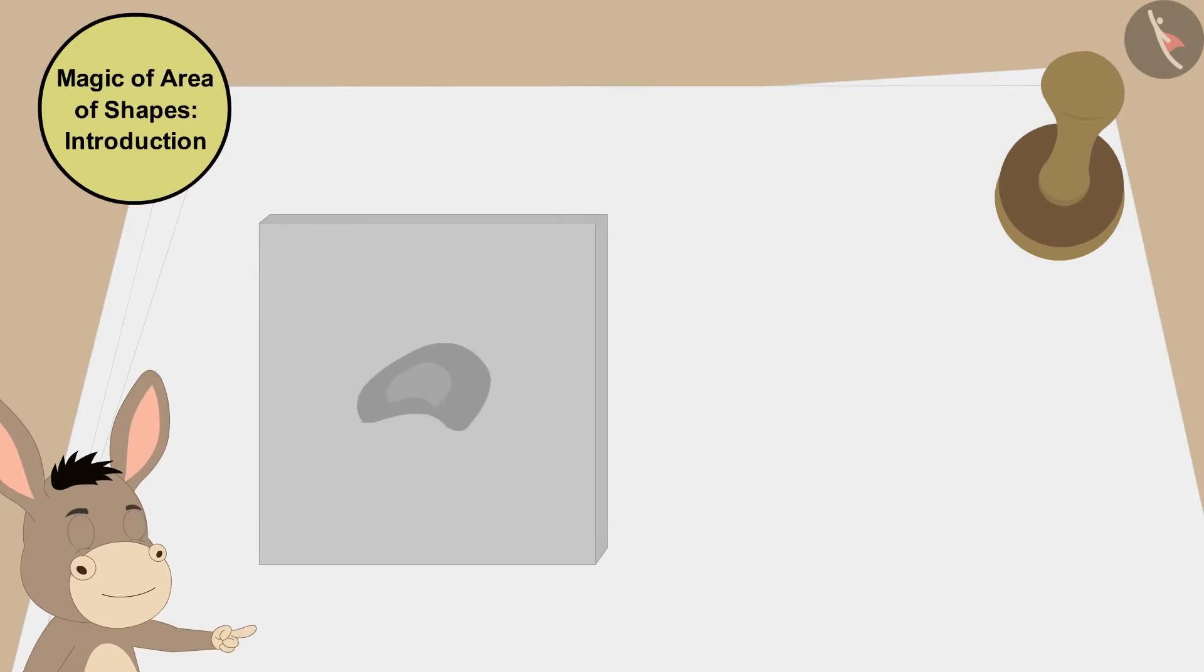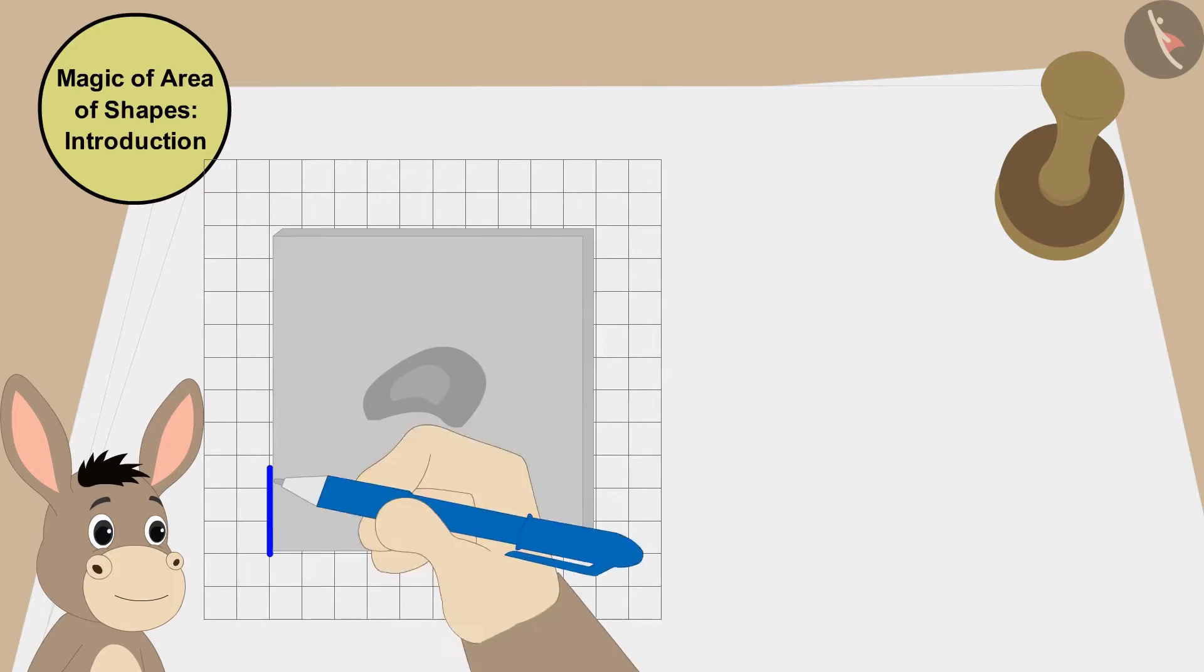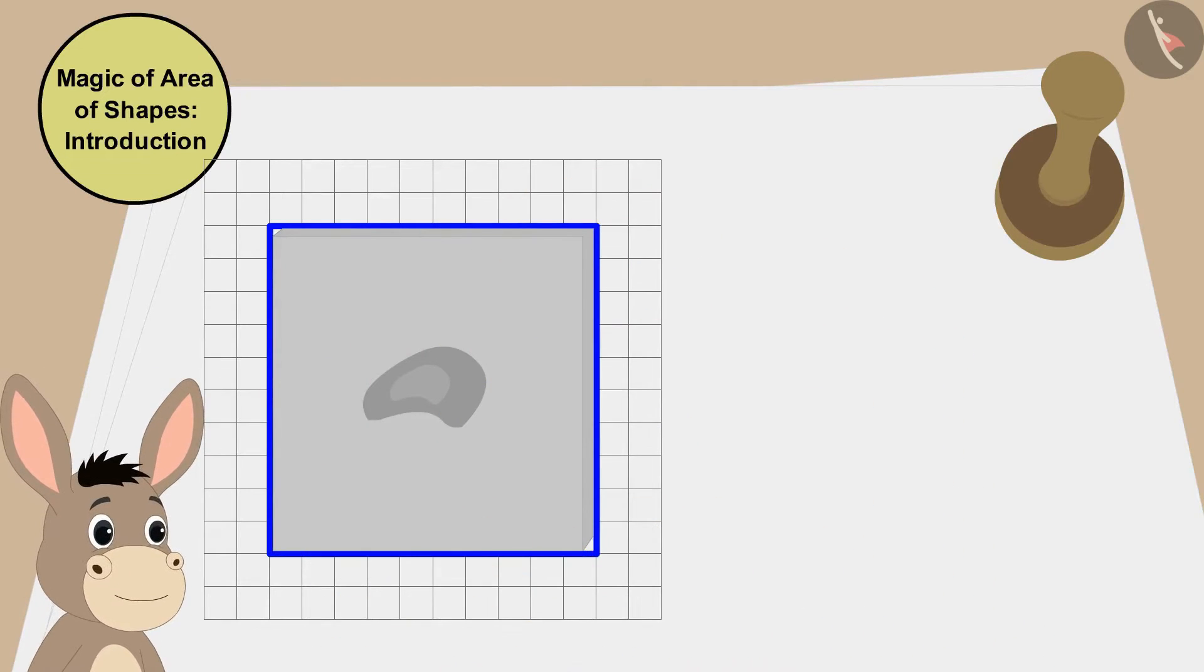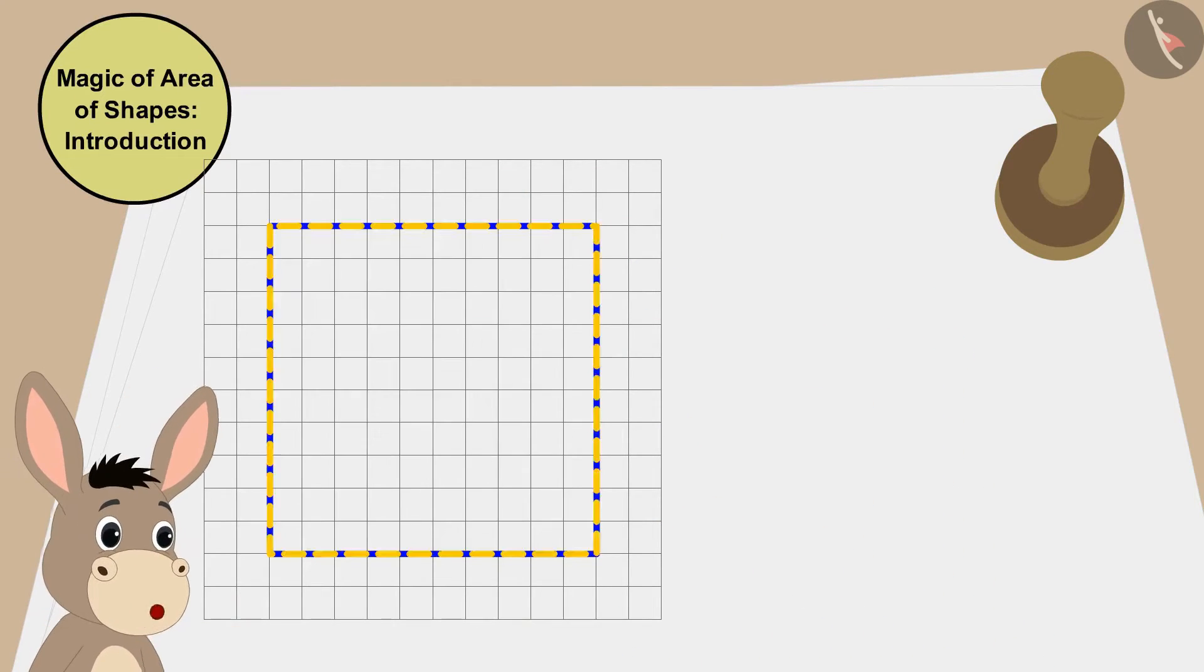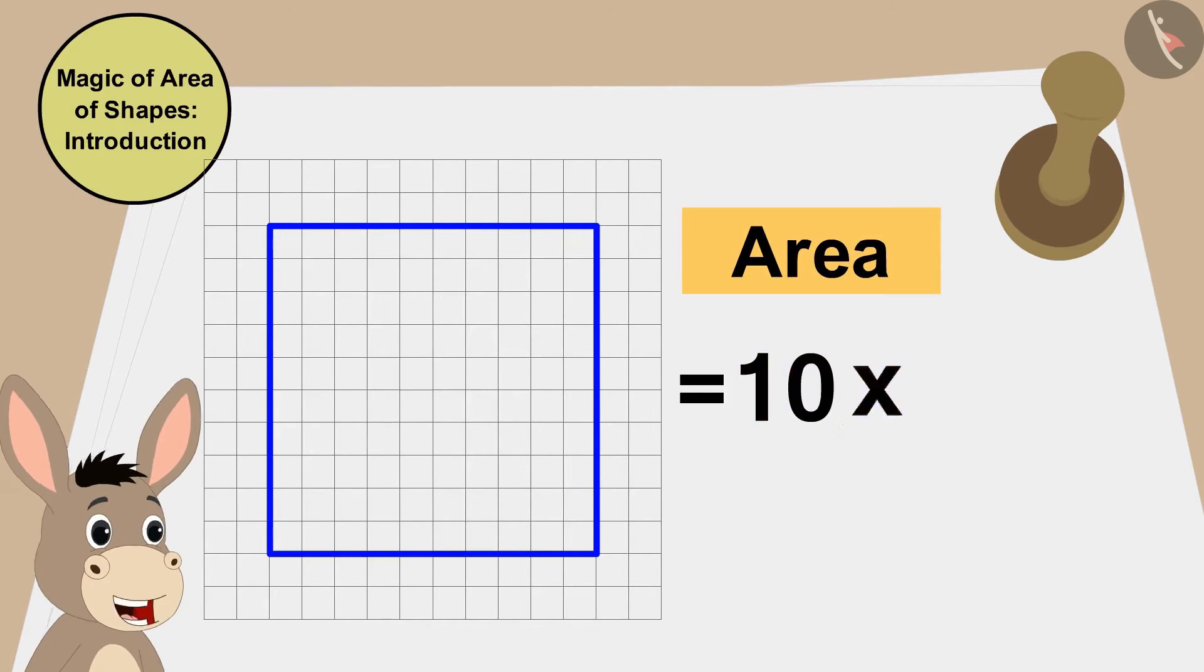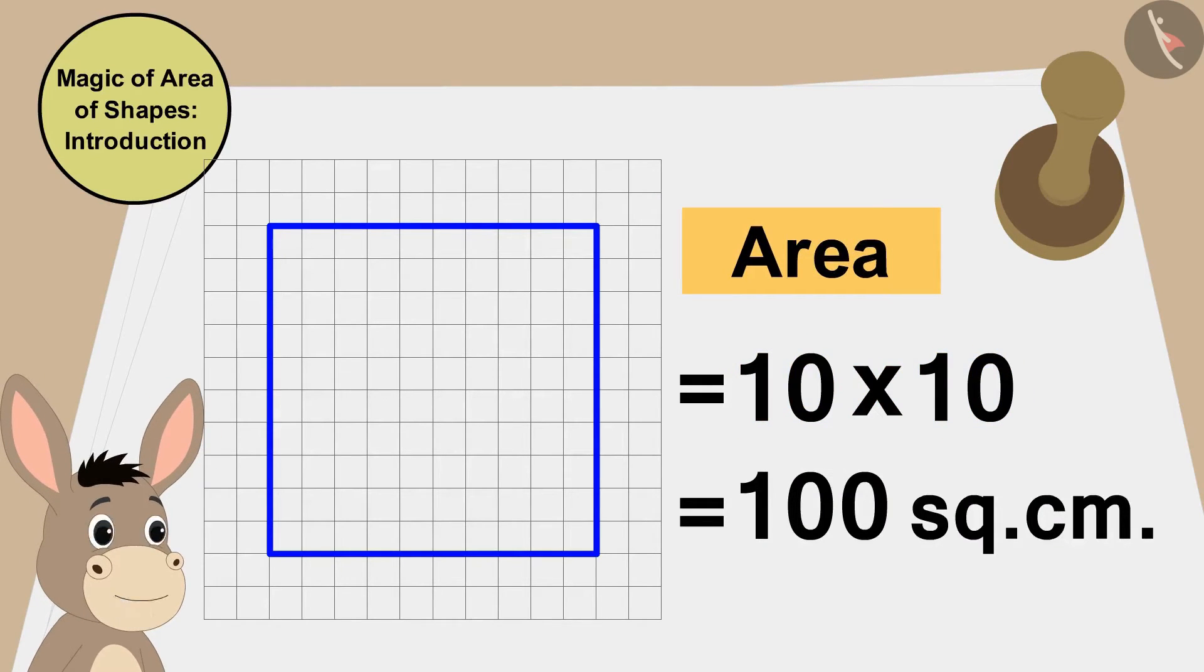Bholla first drew the outline of the cashew barfi on a grid paper like this. The area of this cashew barfi is 10 times 10, that's 100 square centimeters.